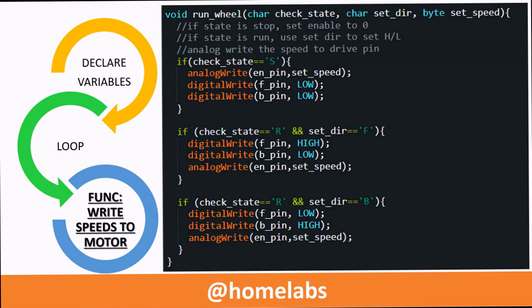Now we look at the function RUN_WHEEL. This function accepts three variables. The first can have variable values of S and R where S denotes that the motor has stopped and R denotes that the motor is running. The character set_dir can have the values of F and B denoting the direction of the motor. And the byte variable set_speed basically is analog written to the enable pin and this sets the PWM value which is conveyed to the motor.